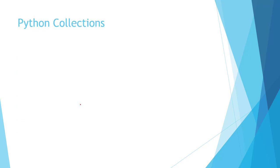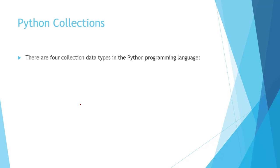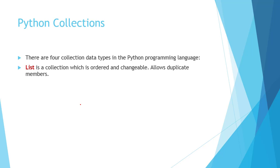First of all, we will see different types of collection data types in Python. There are four types: list, tuple, dictionary, and set. List is a collection data type which is ordered and changeable. We can change the element value in the list and it also allows duplicate members.